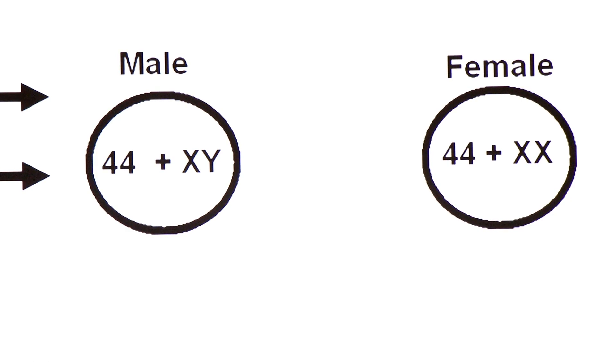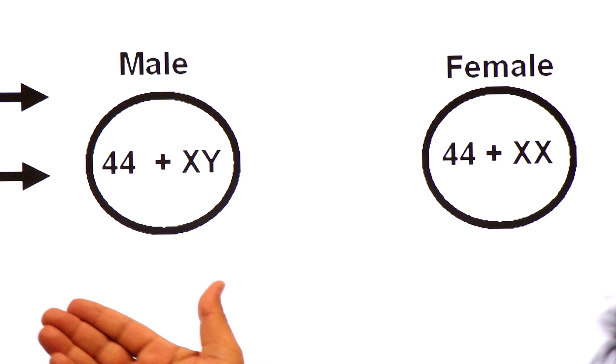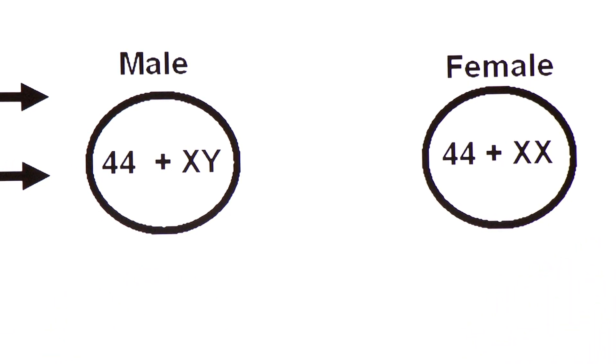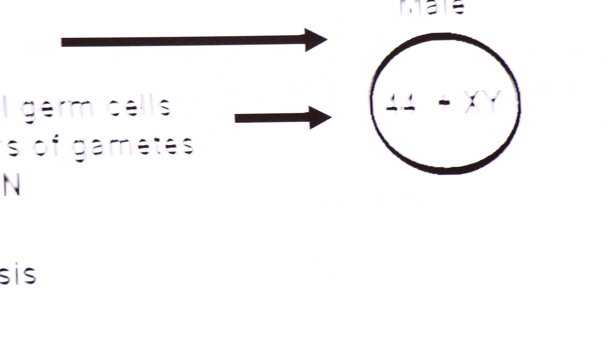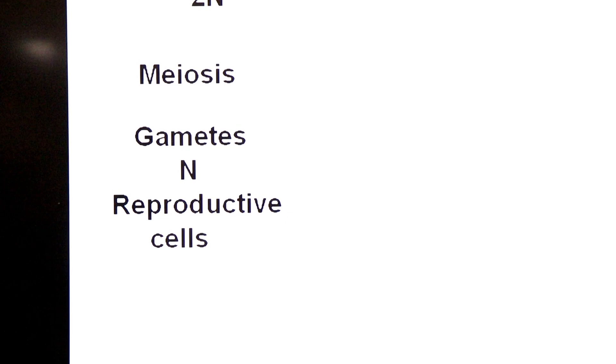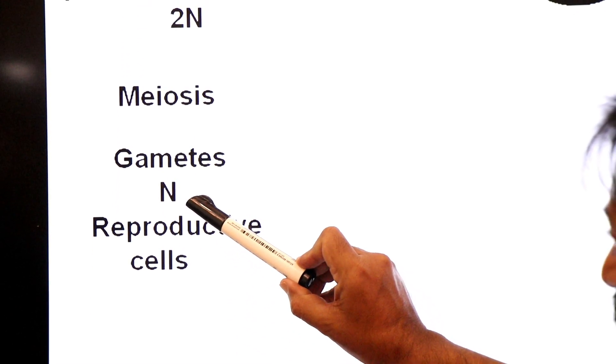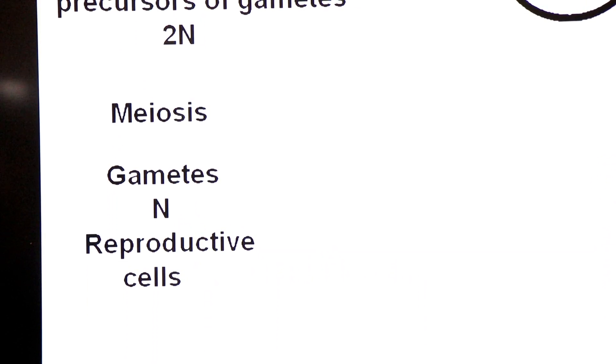These primordial germ cells will give rise to gametes by meiosis. Meiosis reduces the diploid number into haploid in gametes. So gametes are always haploid in number.